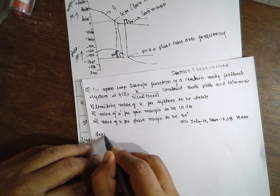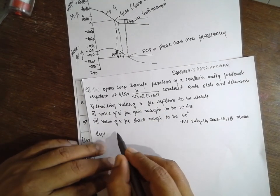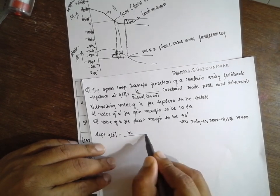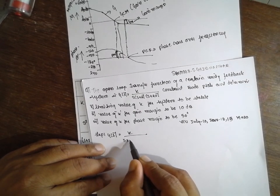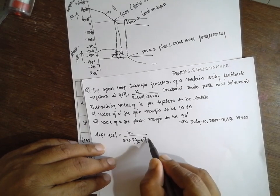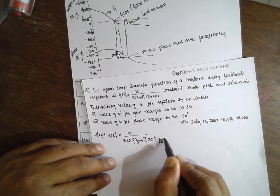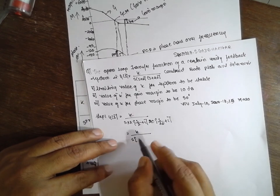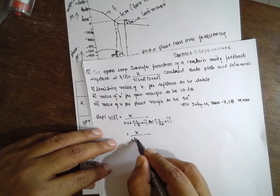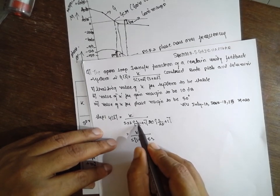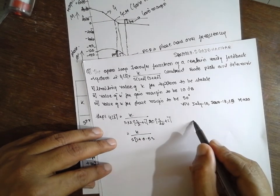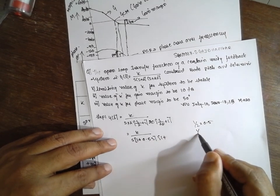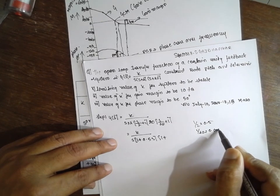Step 1: How to convert into standard fraction form. G of s is equal to K divided by s. The factor (s plus 2) becomes 2 times (s/2 plus 1), and the factor (s plus 20) becomes 20 times (s/20 plus 1). This can be written as K divided by s, times (1 plus 0.5s), times (1 plus 0.05s), since 1/2 is 0.5 and 1/20 is 0.05.